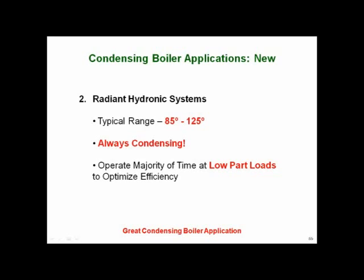How about radiant heat? We have some of that in warehouses and it's very good. This is where we put hot water tubing into cement under the floor to keep the floor warm. You don't want it real hot — typical operating range is 85 to 120 degrees. This application is always condensing and most of the time runs at part load — another great application for condensing boilers.